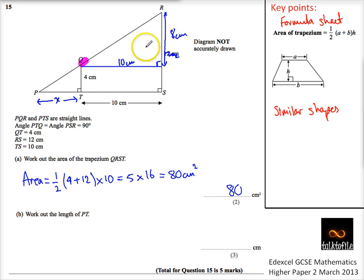So, obviously, to get from X to 10, it's got to double. So we can see straight away that P to T is worth 5 centimeters. It's kind of obvious.